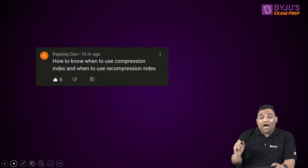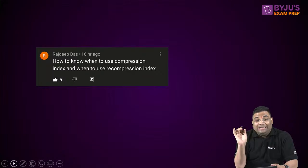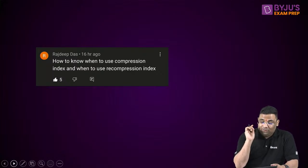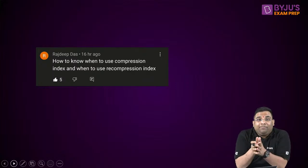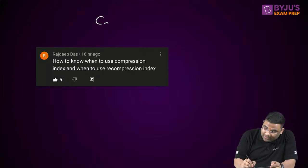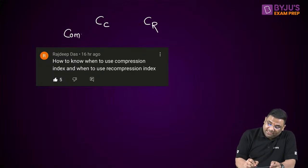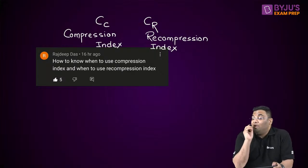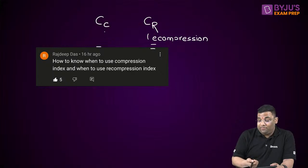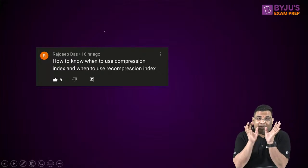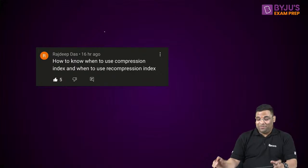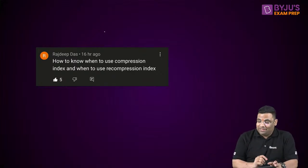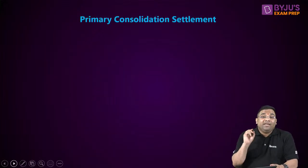One comment was a doubt from Rajdeep Das: how do you know when to use the compression index CC and when to use the recompression index CR? I will clear this doubt in today's lecture. Before solving numericals, let us revise the formulas for finding primary consolidation settlement — also sometimes called ultimate settlement — given by the term delta H.